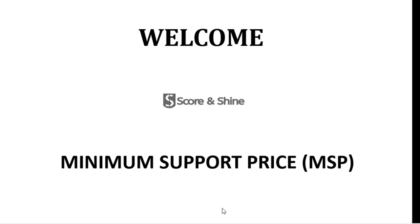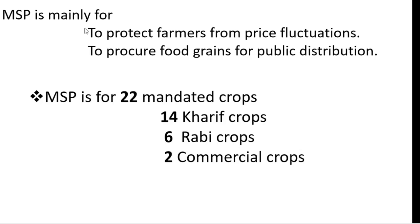First, I'll tell you what MSP is for. The first reason is to protect farmers from price fluctuations, as we cannot predict when prices will fall or increase. The second reason is to procure food grains for the Public Distribution System — by procuring food grains from farmers, they can be distributed to the public through PDS. Hence, Minimum Support Price has been established for these purposes.